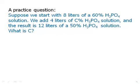Okay, again, you do not need to know what that chemical is, H3PO4, that happens to be phosphoric acid. It's an ingredient in Coca-Cola. But at any rate, suppose we start with 8 liters of a 60% solution. We add 4 liters of a C% solution, so C is the unknown and the result is 12 liters of a 50% solution. What is C? Well, the first thing I'm going to do is figure out how much solute did I begin with and how much solute did I end up with.